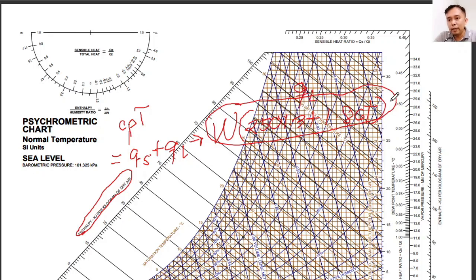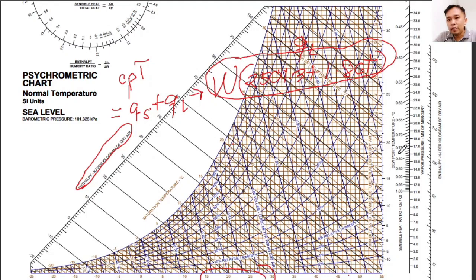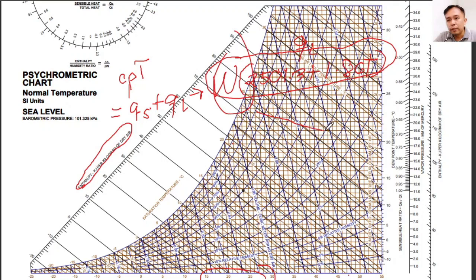So as you can see, as your humidity ratio increases, it comes along with the increase of enthalpy. And also, as your dry bulb temperature increases, it also comes along with the increase of enthalpy, which are both reflected from the Qs plus the Ql.